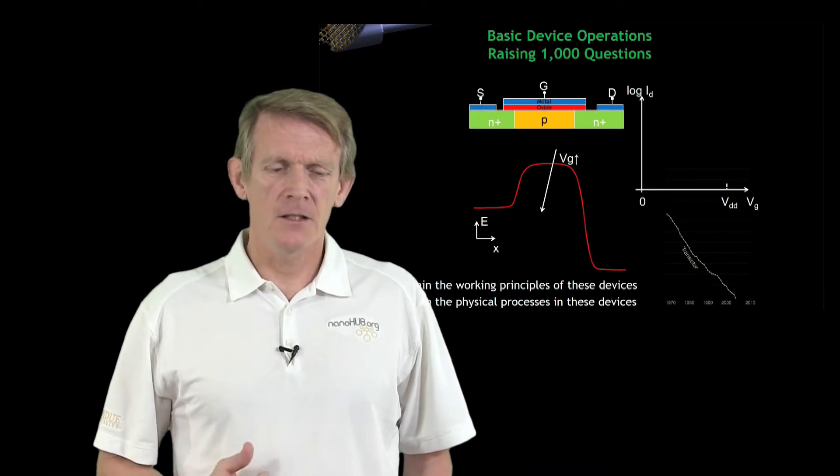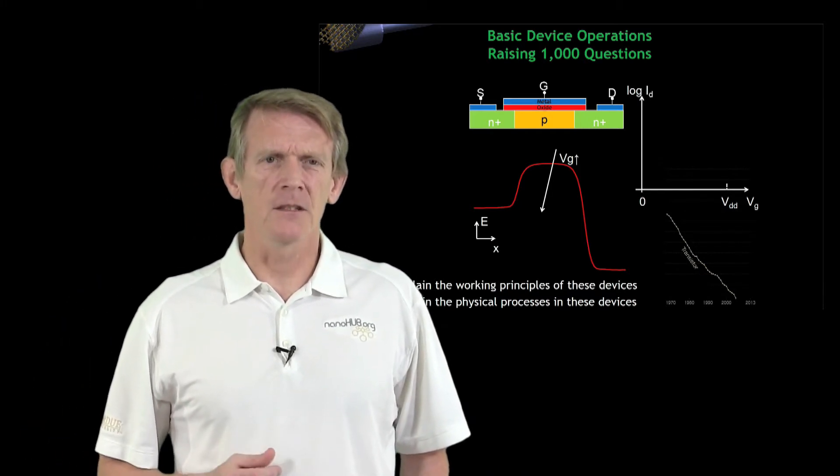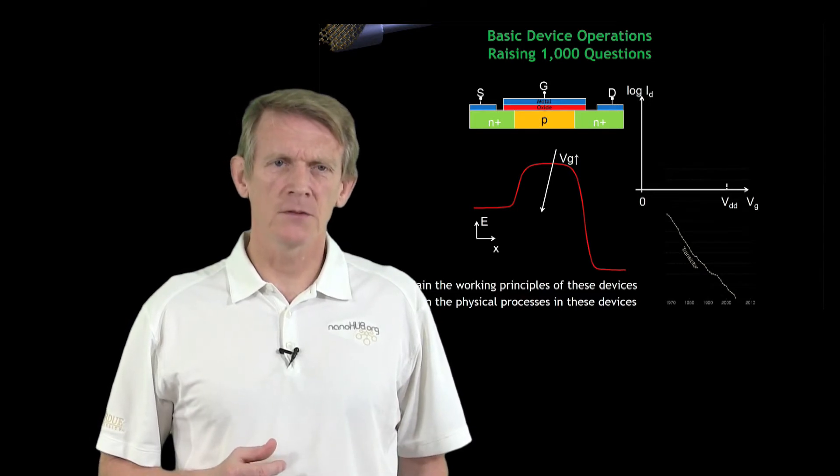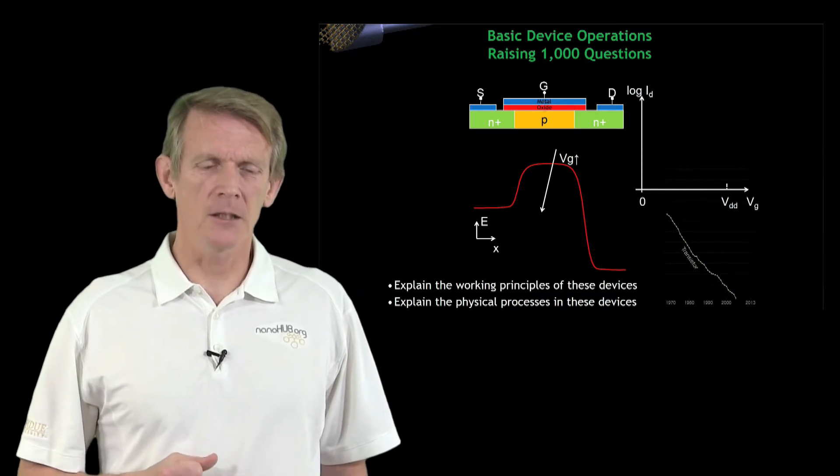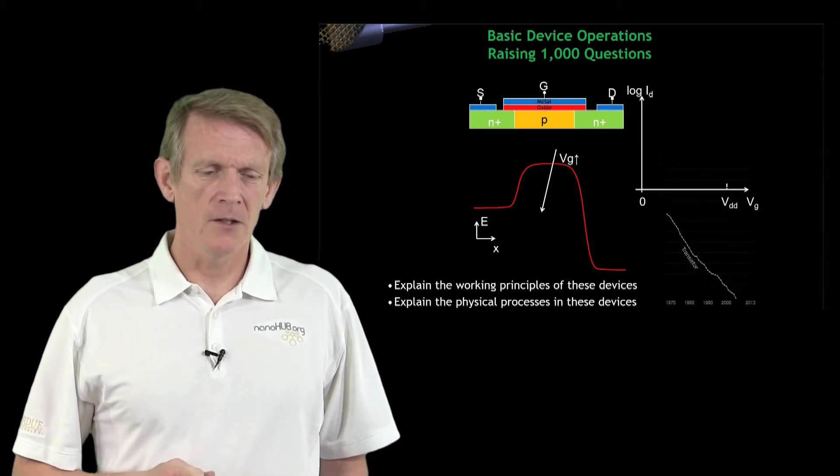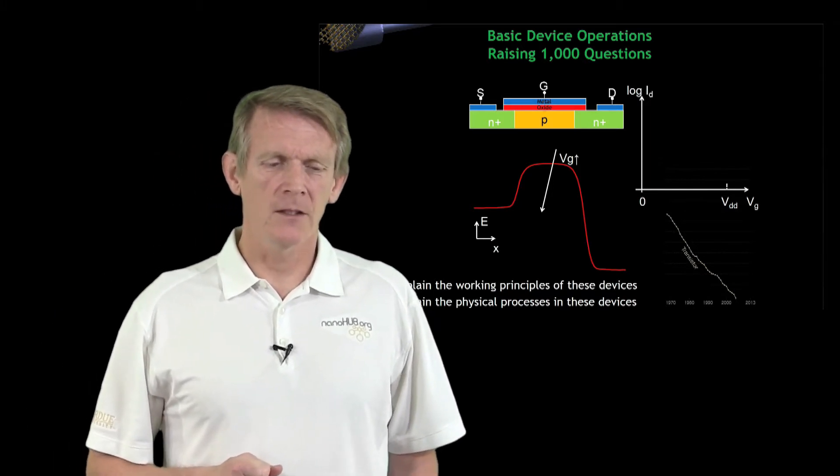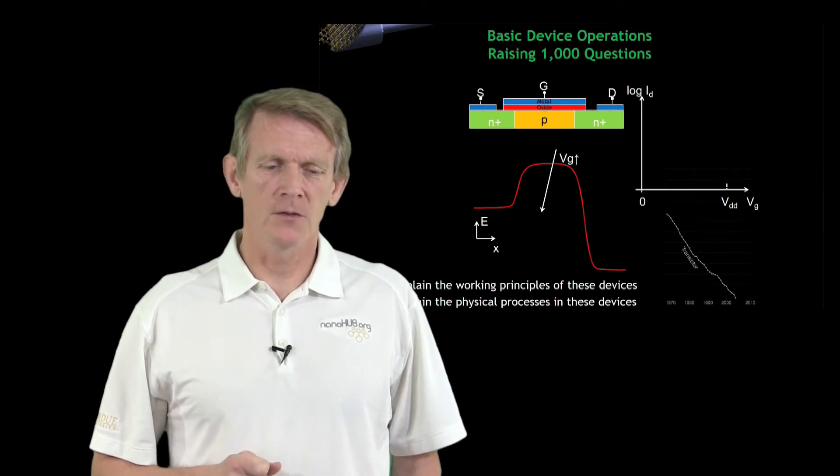The band edge of this transistor is sketched in red. On the left you have a source. In the middle you have the valve that is closed right now - there's a big barrier. On the right you have the drain where the electrons would like to get from the source to the drain.